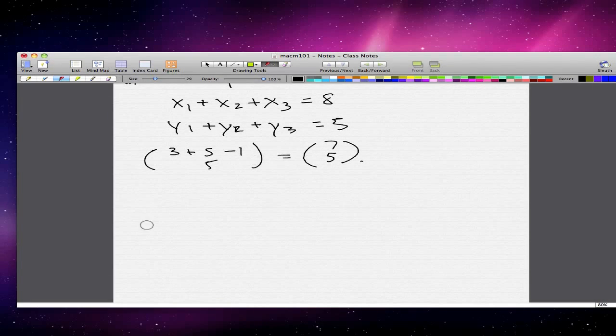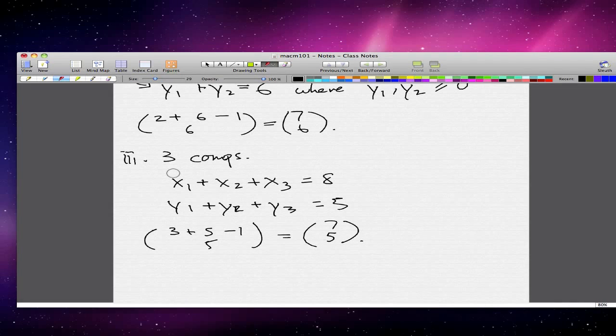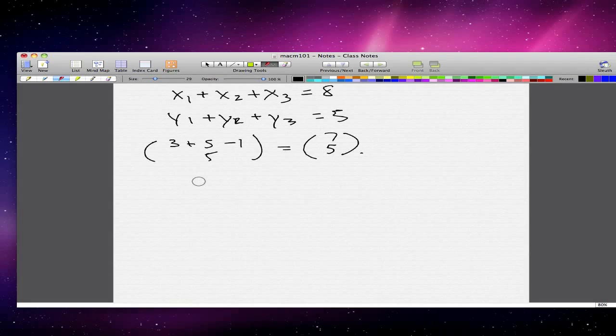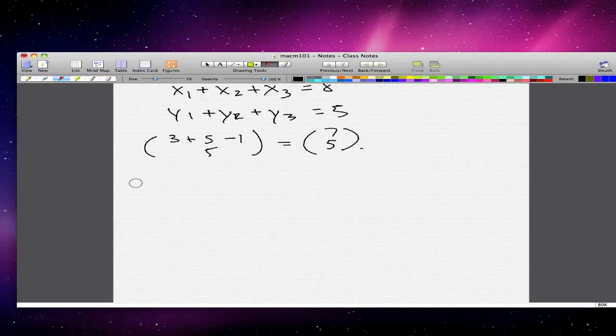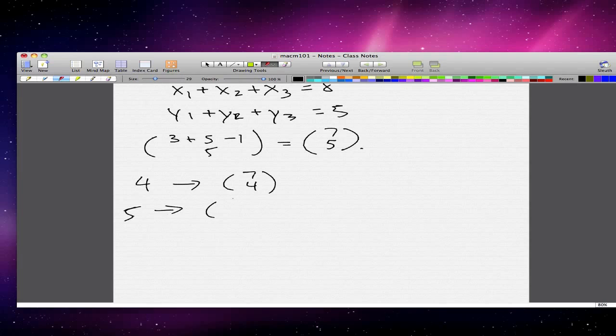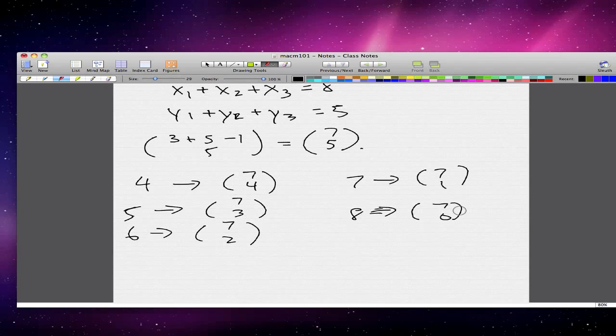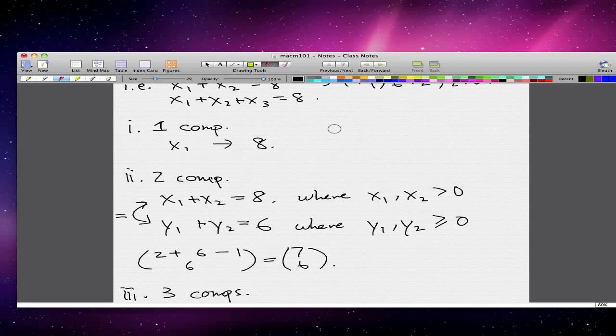That's the pattern. So what you want to do is you want to do this for all the ways where we have 4 compositions that make up 8, 5 compositions, 6, 7, 8 compositions to make up 8. And you actually find that for 4 compositions, what we get is 7 choose 4. For 5 compositions, 7 choose 3. For 6 compositions, 7 choose 2. For 7 compositions, 7 choose 1. And for 8 compositions, 7 choose 0. And of course, when we have 1 composition, it's 7 choose 7.